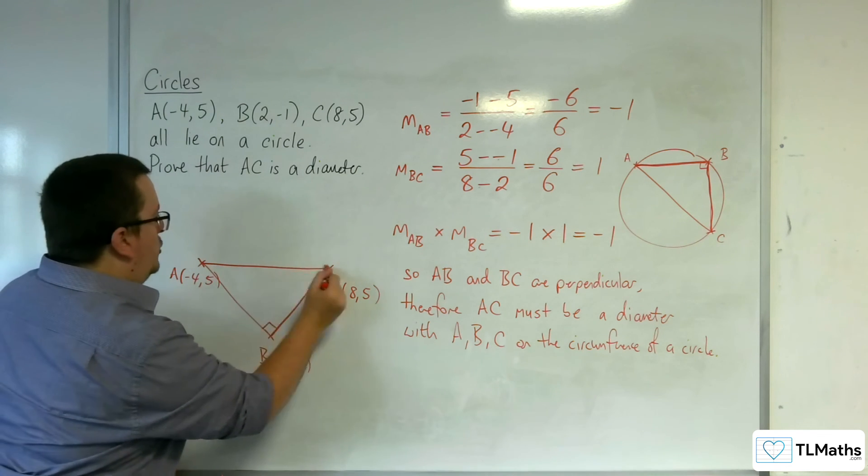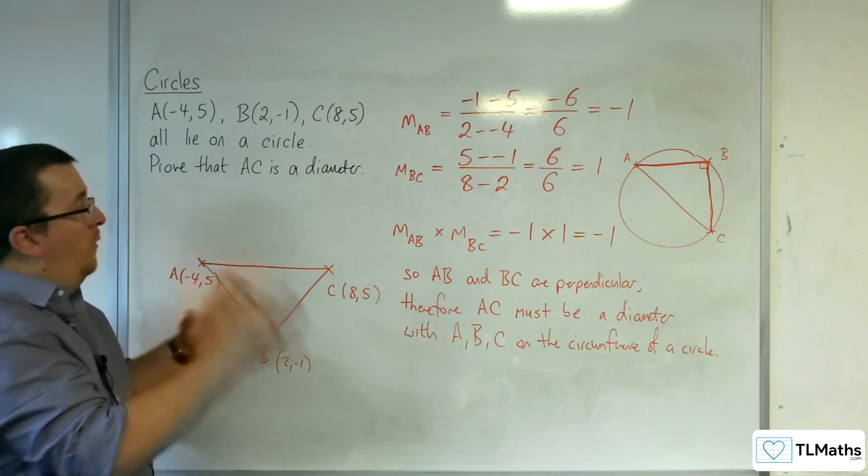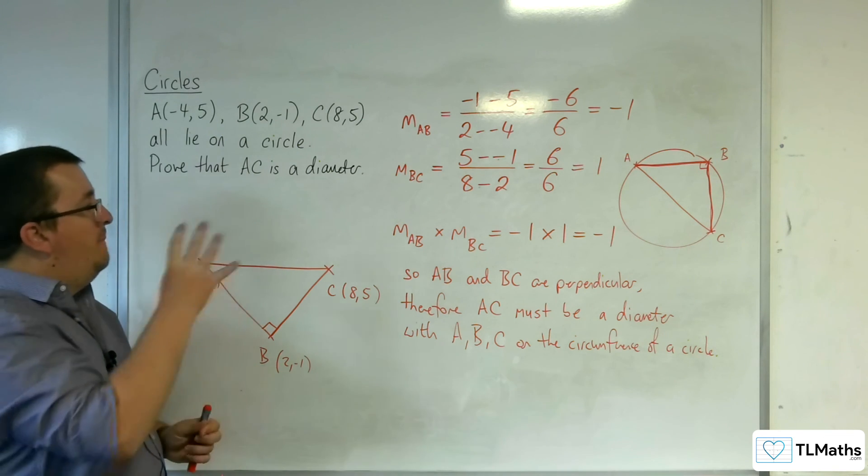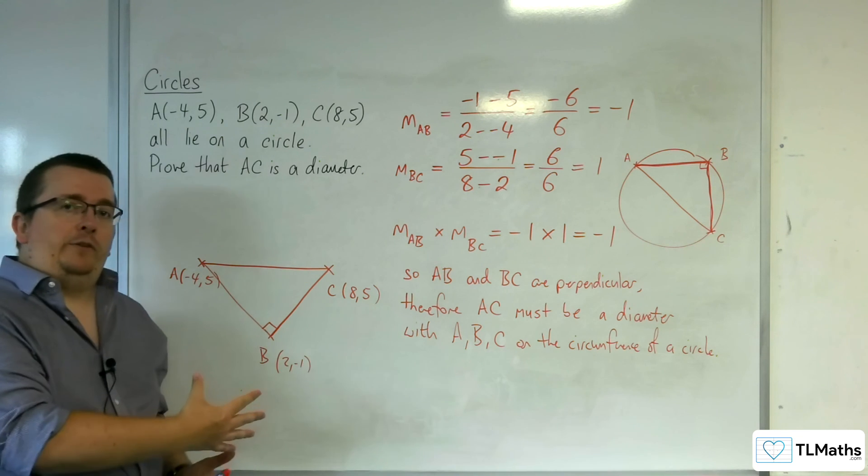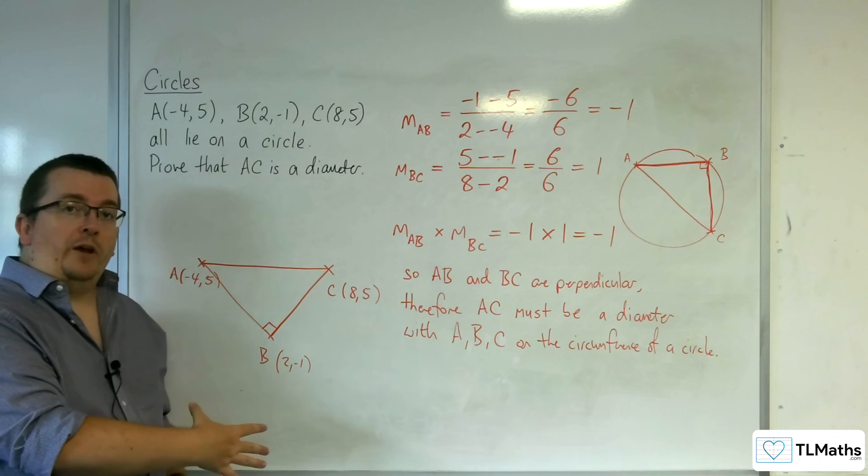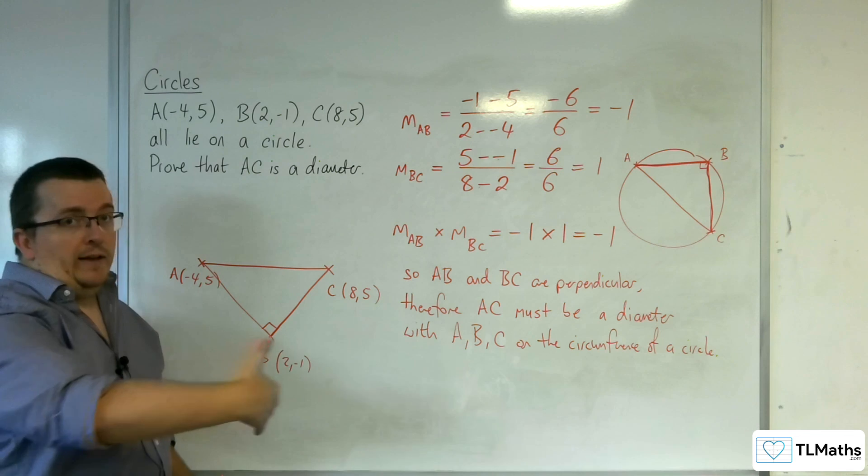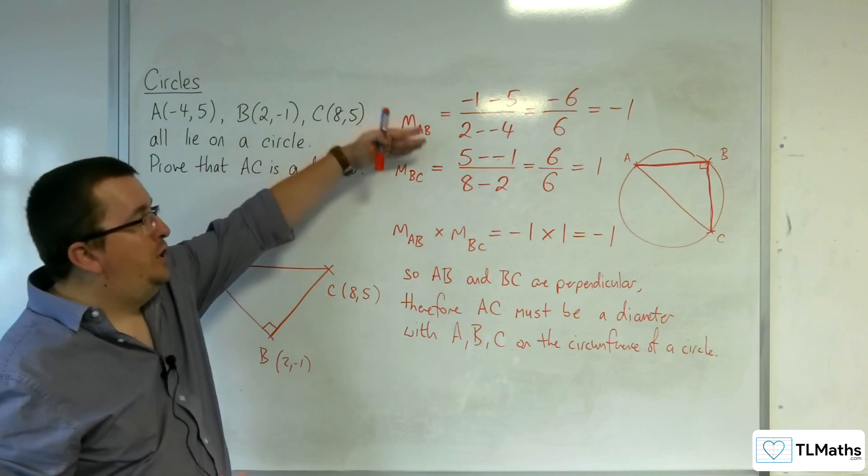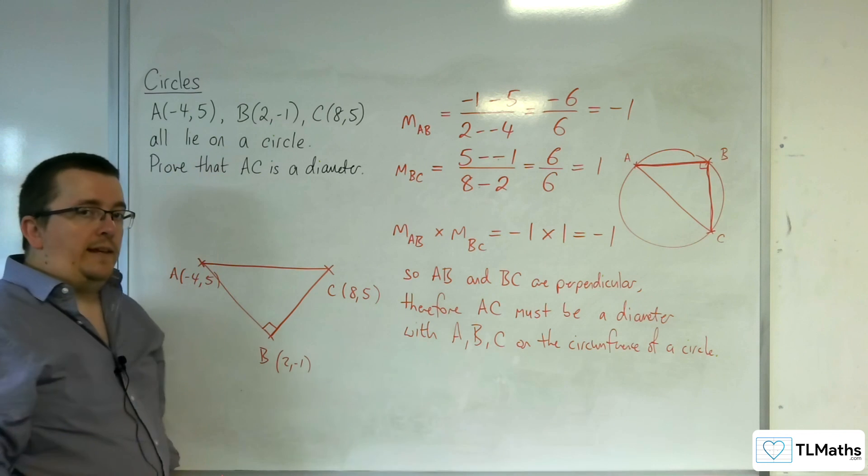So, that shows that AC has to be a diameter. And that's the process that we want to go through. So, make sure that when you're dealing with problems like this, that you draw yourself a little diagram so you can visualize what's going on. And through the diagram, that often infers the process algebraically that you would need to go through to prove what you need to do.